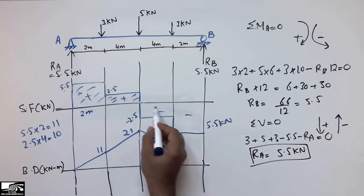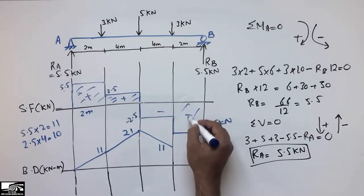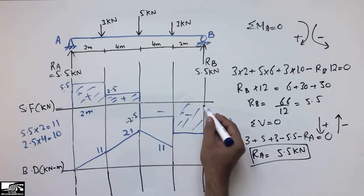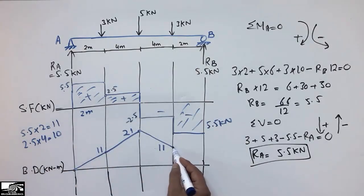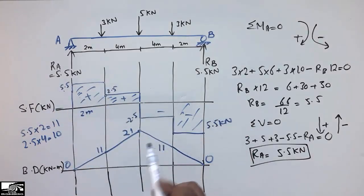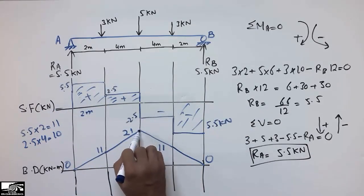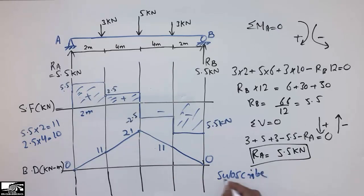Subtracting the final rectangle — height 5.5 and length 2 meters giving area 11 — from 11 gives 0. So we have zero bending moment at both ends, which is correct for hinge and roller supports, and a maximum bending moment of 21 kN·m at the midpoint under the 5 kN load. This is how to calculate the shear force and bending moment diagram. If you have any questions, comment below and don't forget to subscribe for daily civil engineering videos.